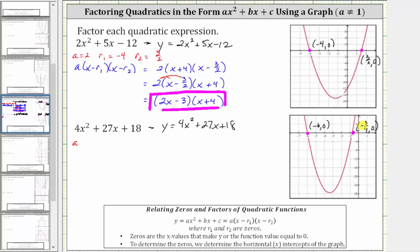So now we know that a is equal to the coefficient of x squared, which is four; r sub one is negative six; and r sub two is negative three fourths. Writing the given expression in the form a times the quantity x minus r sub one times the quantity x minus r sub two: a is four; x minus r sub one is x minus negative six, which simplifies to x plus six; and then we have times the quantity x minus r sub two, which is x minus negative three fourths, which simplifies to x plus three fourths.